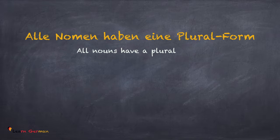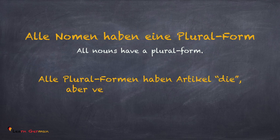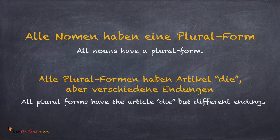Two things you must remember: Alle Nomen haben eine Pluralform — all nouns have a plural form. Und alle Pluralformen haben Artikel die aber verschiedene Endungen — and all plural forms have articles but with various endings. So today we'll be doing the various endings.